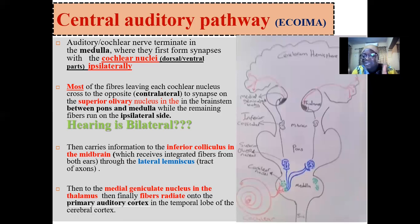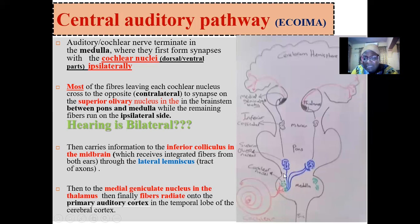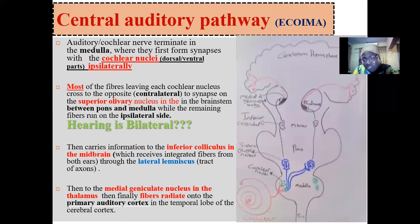The cochlear nuclei are located ipsilaterally — the right ear synapses on the right cochlear nuclei in the medulla, and the left ear synapses on the left cochlear nuclei. After synapsing at the cochlear nuclei in the medulla, most of the fibers cross to the contralateral side to synapse on the superior olivary nucleus. The superior olivary nucleus is located at the junction of the medulla and the pons. Some remaining fibers run to the superior olivary nucleus on the same side. This bilateral arrangement is what allows for bilateral hearing.